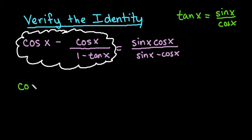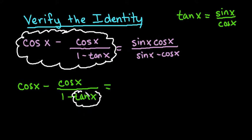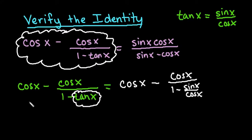So like I said, I'm going to start with the left-hand side and I'm going to see can I simplify it into the right-hand side. So my first step is to replace tangent x with what it's equal to. So I'm going to say that cosine x minus cosine x over 1 minus sine x over cosine x.